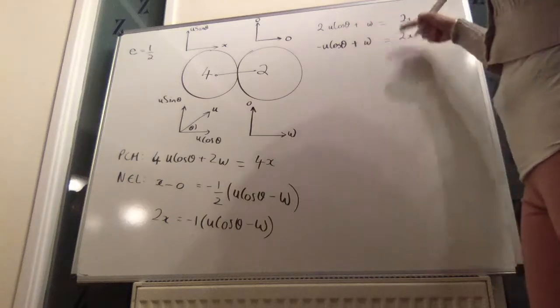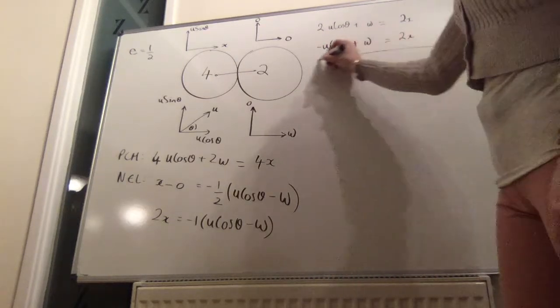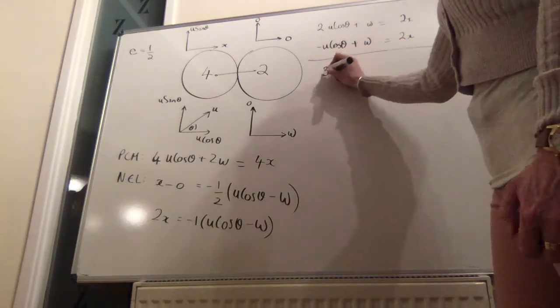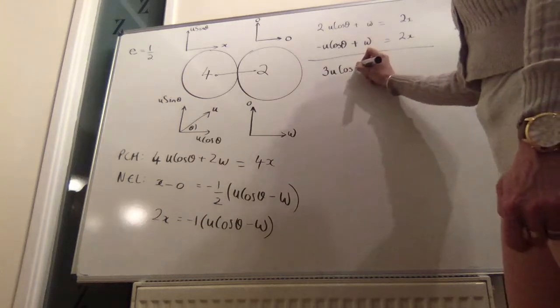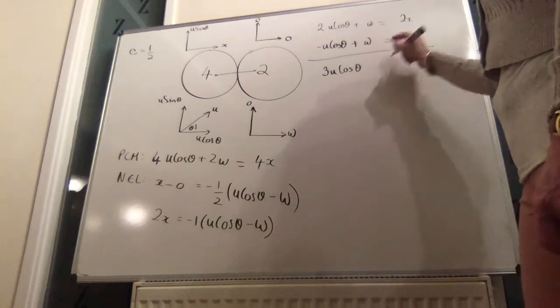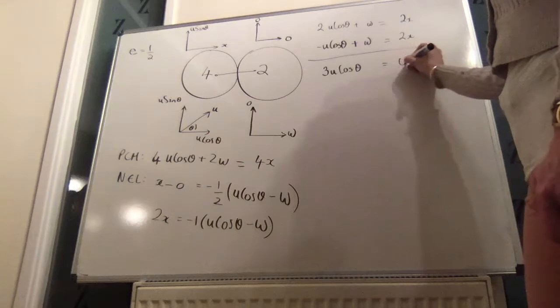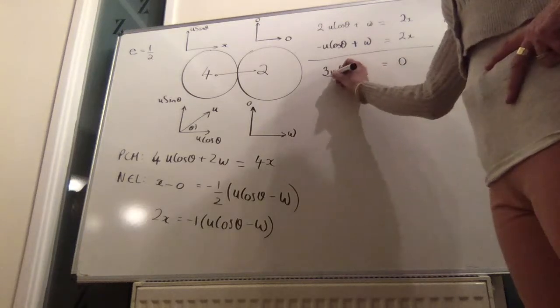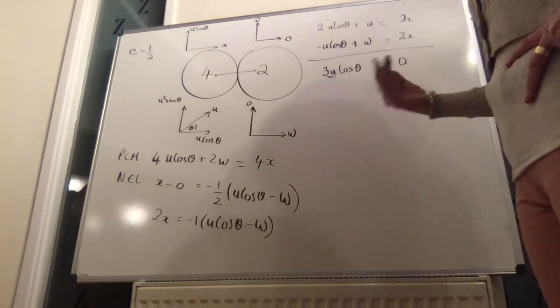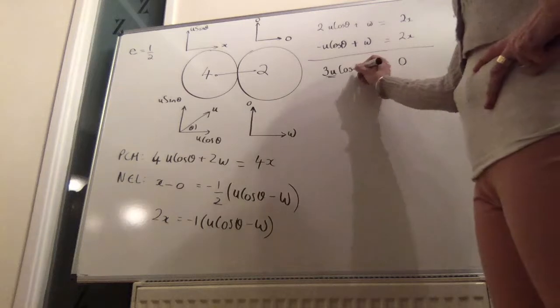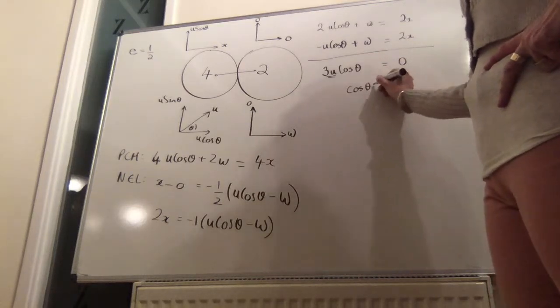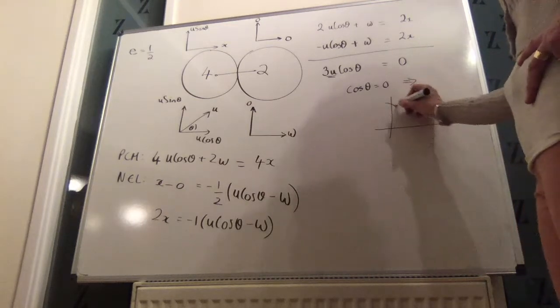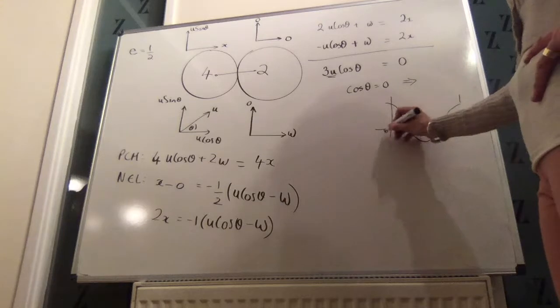If we subtract the bottom one from the top, we will get 2u take away minus u. So, that will give me 3u cosine theta. That take away that gives me 0. That take away that gives me 0 is equal to 0. 3u cosine theta equals 0. Well, we know that u isn't 0 because we know it's traveling at a particular velocity. So, the only way that this will work is if cosine theta is 0.